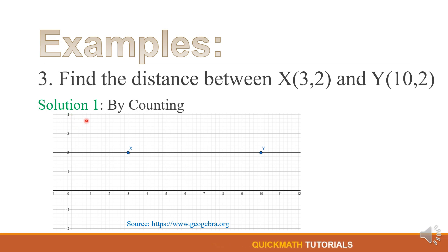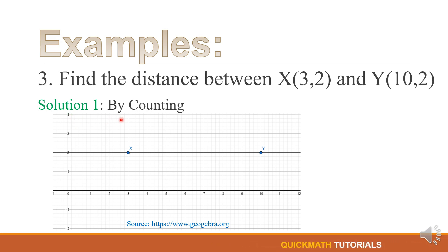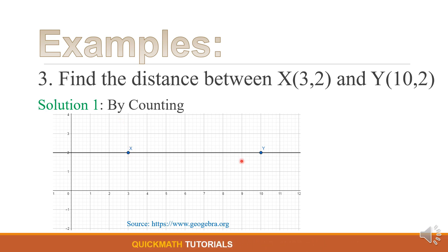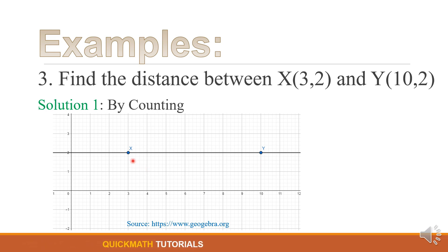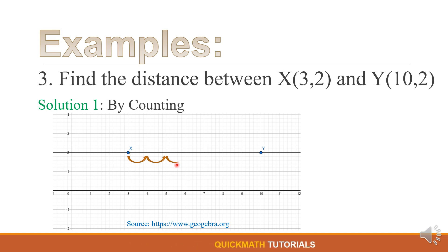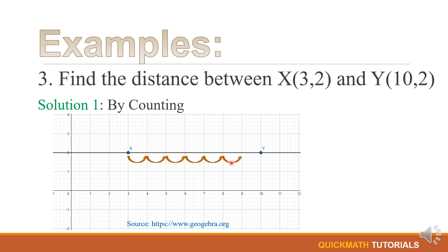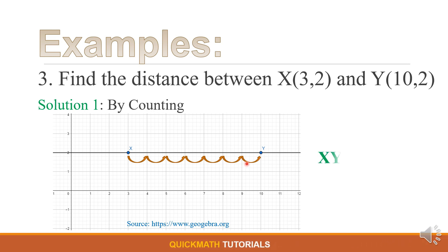Solution number 1: by counting. We will count from X to Y or from Y to X. For this example, let's start from X — 1, 2, 3, 4, 5, 6, 7. Therefore, the distance between X and Y is equal to 7.